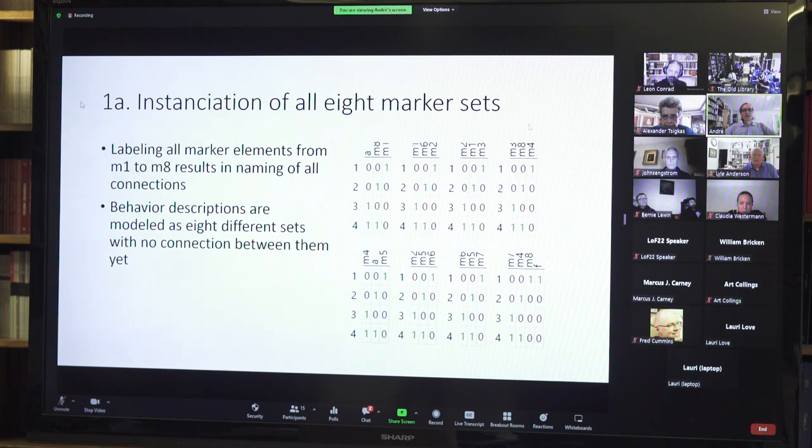The first part of the instantiation is the labeling of all marker elements from M1 to M8. The result is eight different tables. They have exactly the same vectors 1, 2, 3, 4 which satisfy the NOR operation. But if you look closely at the columns, you see different variable names. For now, those eight sets live in a different world. They have nothing to do with each other. The behavior descriptions are modeled as eight different sets with no connections between them.